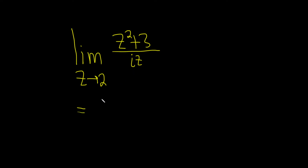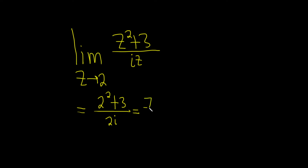So this is equal to 2 squared plus 3 over, and then we just have 2i on the bottom. So this is equal to 4 plus 3, which is 7 over 2i.